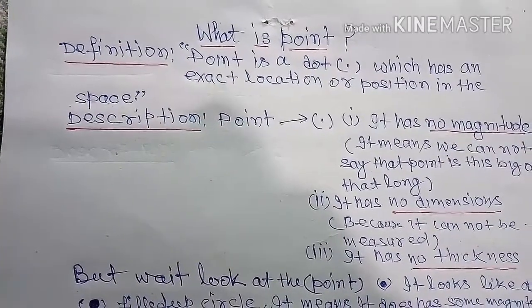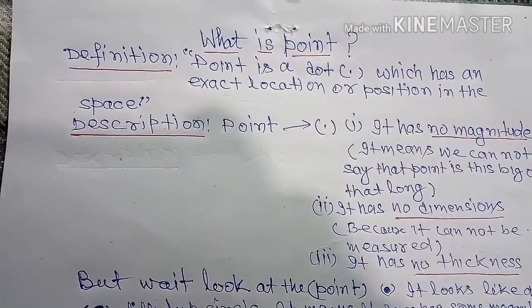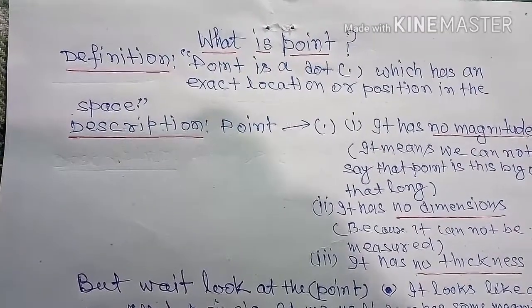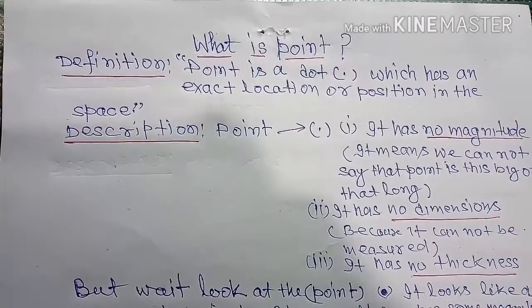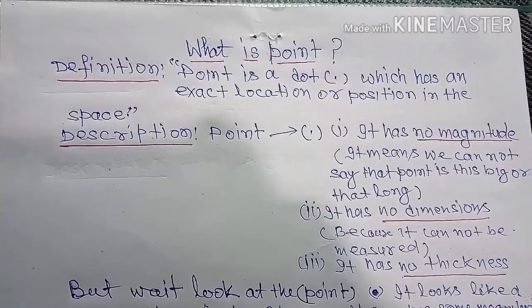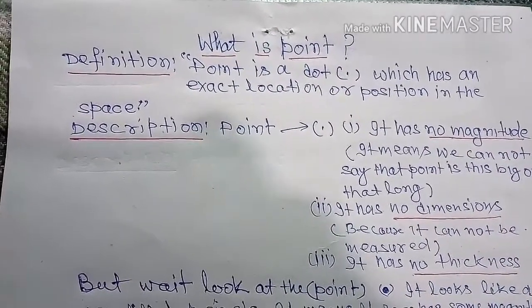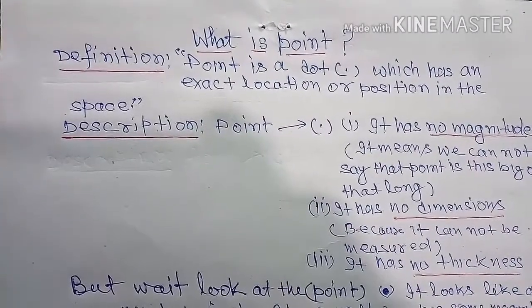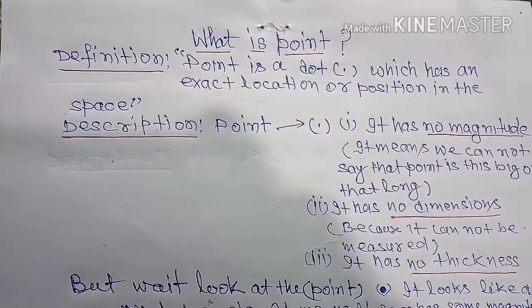It has many confusions. Most of us know about the point but there is confusion. Now we will discuss the point definition. Point is a dot which has an exact location or position in the space.